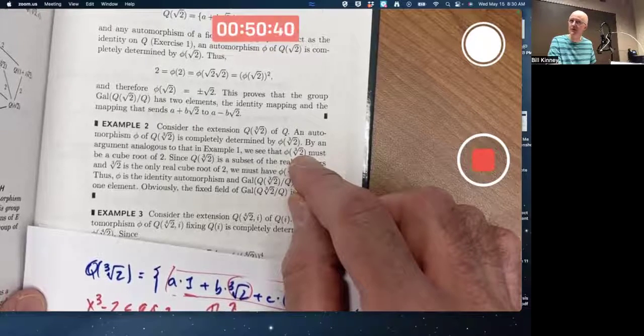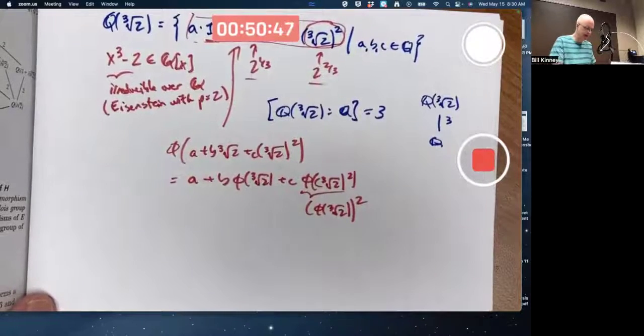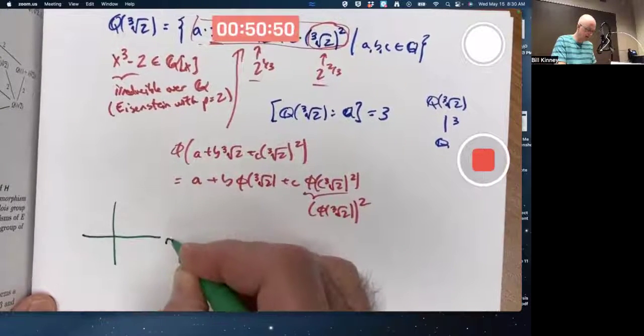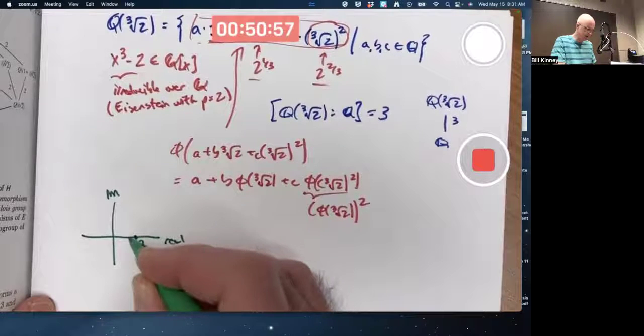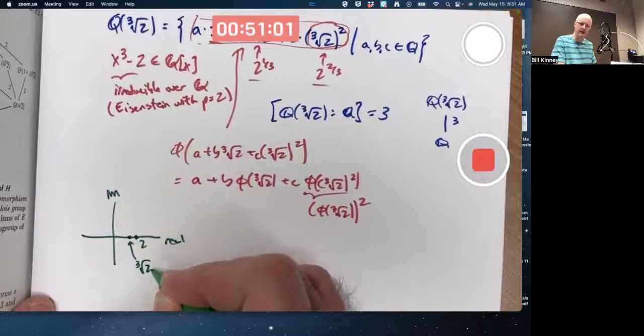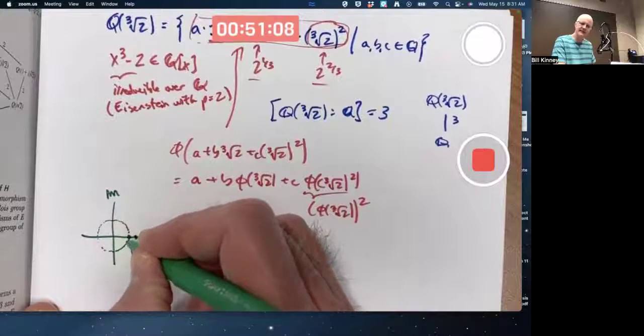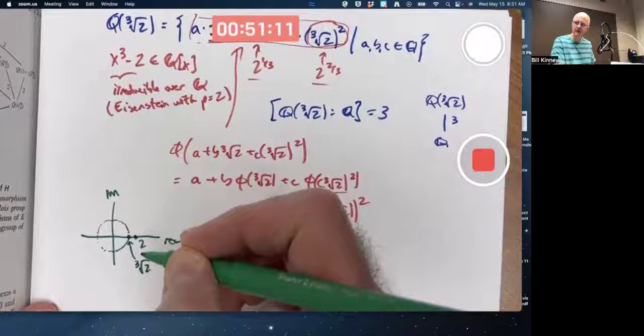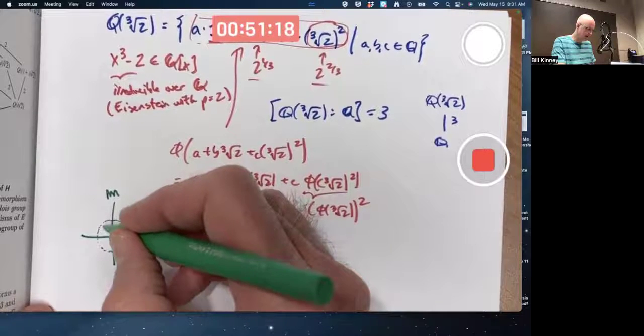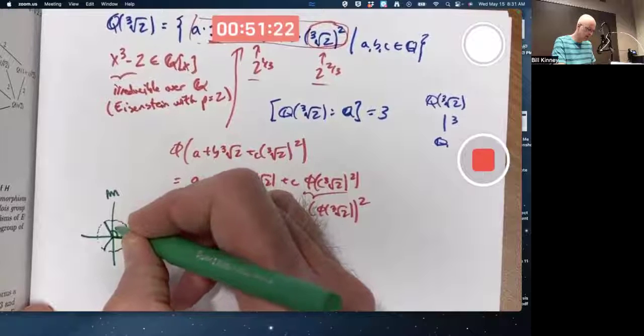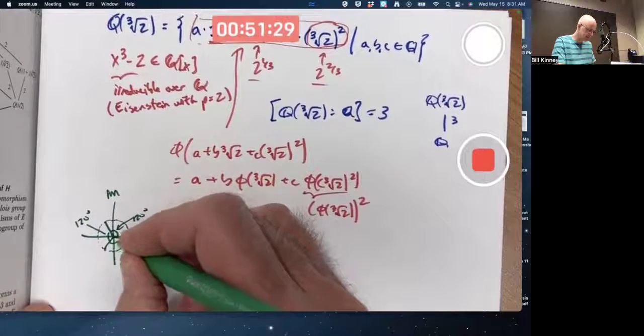There are two other numbers whose cube is 2, but they're complex numbers. If you draw the complex plane, real axis, imaginary axis, the number 2 is right here on the real axis, the number cube root of 2 is right about there. The other cube roots of 2, the other numbers whose cube is 2, lie on the same circle centered at the origin. And the angle that they make with each other is 120 degrees. That's 120 degrees there. This is 120 degrees there. This is 120 degrees there.